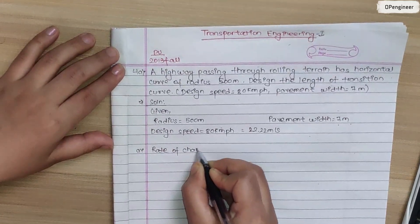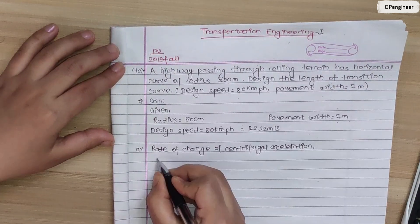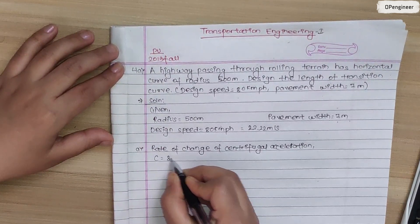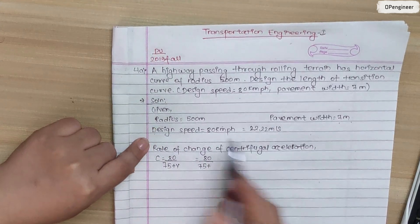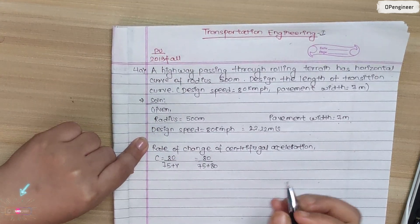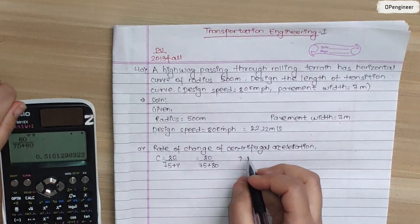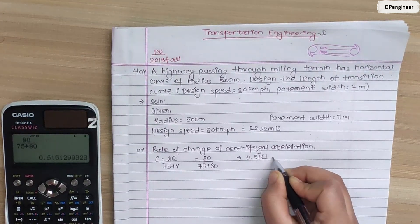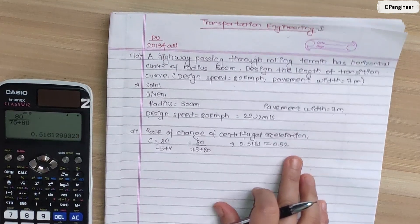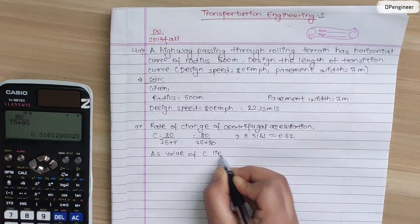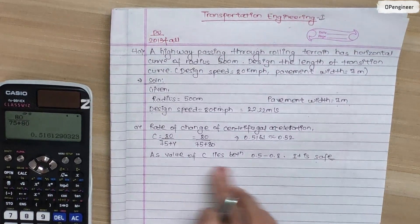Rate of change of centrifugal acceleration: the formula is C equals 80 divided by (75 plus V). With design speed V = 80 km/h, calculate 80 divided by (75 plus 80) = 0.516, approximately 0.52. As the value of C lies between 0.5 and 0.8, it is safe.